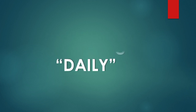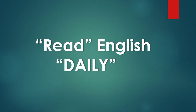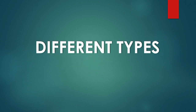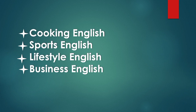Let's move on to tip number two: read English daily. Reading English helps you learn about the different types of English — related to cooking, sports, lifestyle, and business. While cooking we use different vocabulary; in sports there are different vocabularies and ways of explaining how players perform. Lifestyle English is the easy conversational English we use day-to-day, and business English has its own phrases and vocabulary. You need to read different types of English so your brain knows a variety of words and phrases.